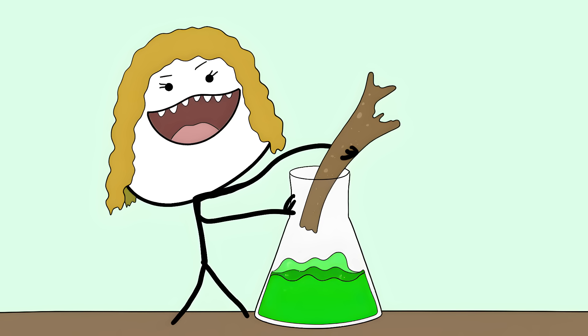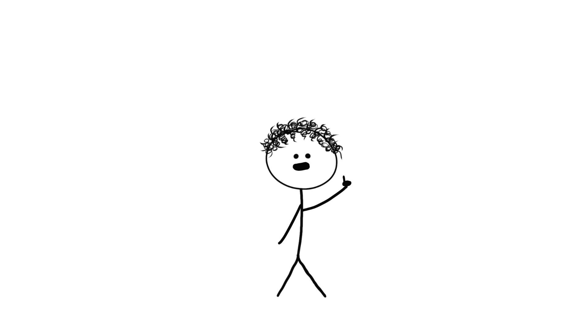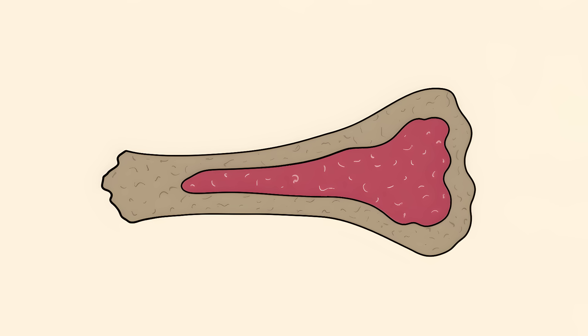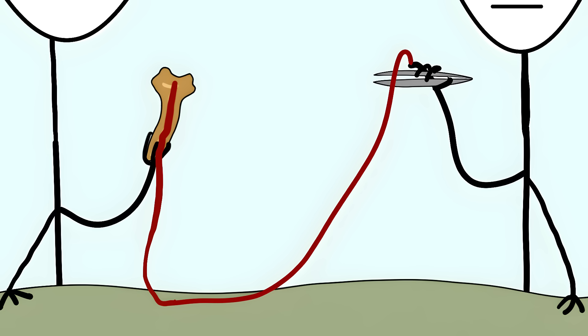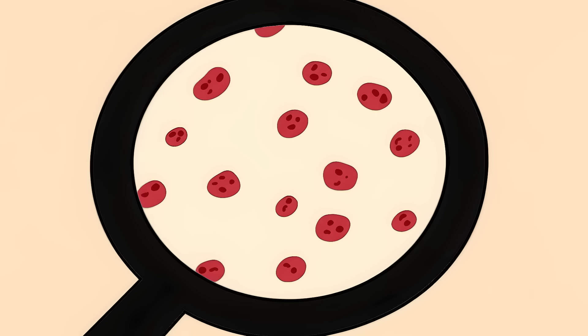She took this priceless dinosaur bone and dumped it in acid. But what she found inside changed everything we know about fossils. Inside this ancient bone was actual soft tissue, blood vessels that could still stretch and bend like rubber bands. And she found what looked like red blood cells.